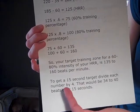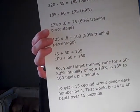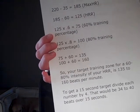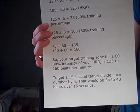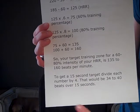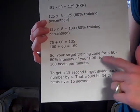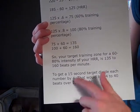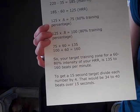If we're going to be taking a 15-second pulse — evaluating our pulse at either the radial or carotid artery, like we talked about on day 60 — we're going to divide both of those numbers by 4, which gives us 34 to 40. That's an easy way to get a quick pulse check when you're taking your heart rate.